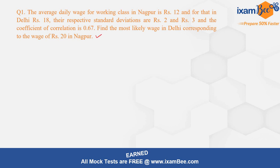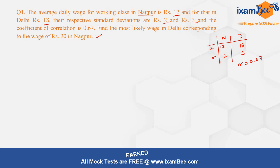This is one of the questions from regression analysis. It states that the average daily wage of working class people in Nagpur is ₹12 and in Delhi is ₹18, with respective standard deviations of 2 and 3 for Nagpur and Delhi. The coefficient of correlation R is 0.67 between the daily wages of people working in Nagpur and Delhi. You have to find the most likely wage in Delhi corresponding to a wage of ₹20 in Nagpur.